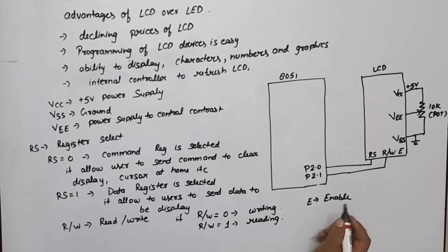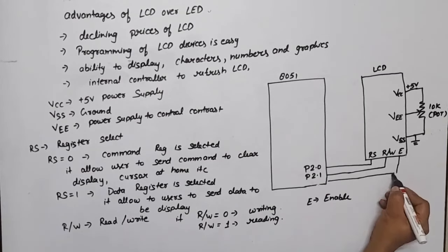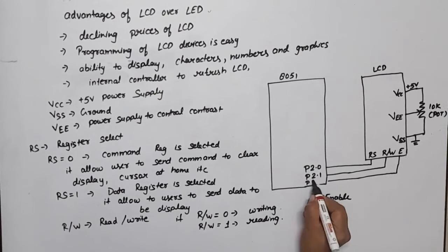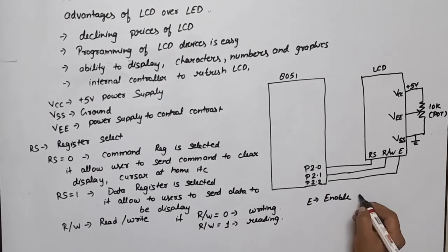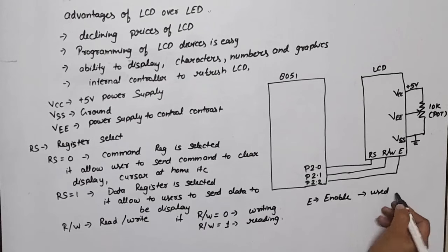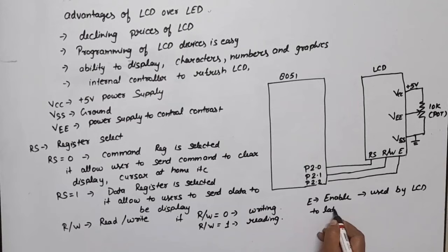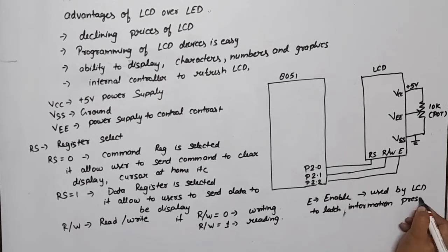Next is E, Enable pin, and this is connected with P2.2. What is the function of this? This pin is used by LCD to latch information presented on data bus.